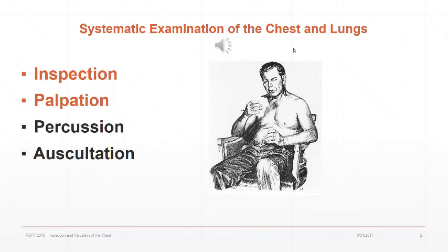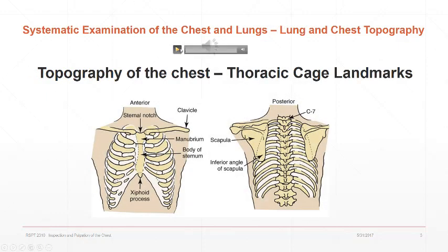We're going to start with topography of the chest before we go on to the details of inspection. It's important that we'll be able to locate ribs to identify underlying structures as we examine the patient's chest. The author starts with thoracic cage landmarks: the first rib is attached to the manubrium, and the manubrium connects to the sternum at the angle of Lewis, where the second rib is attached. Those two landmarks help us count the ribs from there.